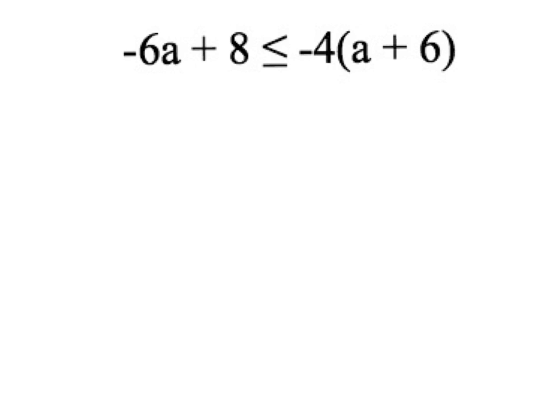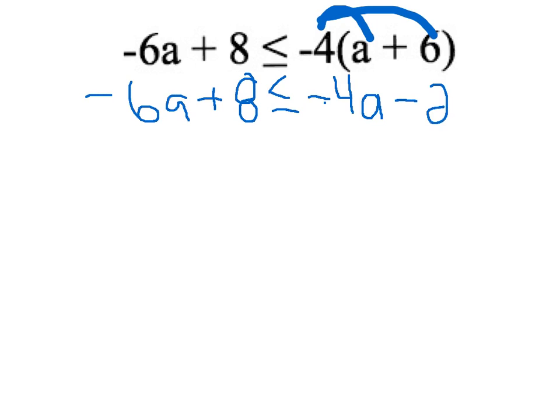We are going to first use order of operations to distribute the negative 4 onto the a and the 6. Then our problem becomes negative 6a plus 8 is less than or equal to negative 4a minus 24.